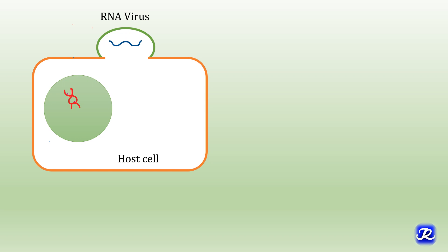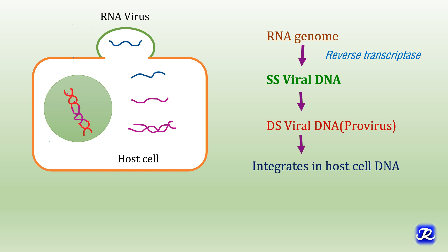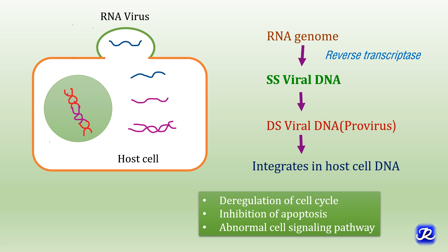When an RNA virus infects a host cell, the RNA genome is copied to form a single-stranded viral DNA by the action of the enzyme reverse transcriptase. From this single-stranded viral DNA, the complementary strand is formed, resulting in double-stranded viral DNA also called a pro-virus. This pro-virus integrates into the host cell DNA and causes deregulation of the cell cycle, inhibition of apoptosis and abnormal cell signaling pathways, and by this mechanism RNA viruses are involved in the causation of cancer.